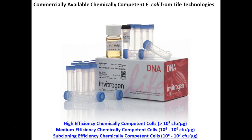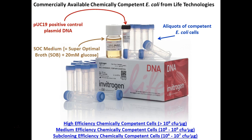Different kits have different levels of transformation efficiency. The kit we purchased from Bio-Rad has a known, pre-calculated efficiency rate — they give you a positive control plasmid, the food necessary, and aliquots of competent E. coli cells. I already streaked the competent bacteria onto plates in the incubator that I'll take out to give to you.